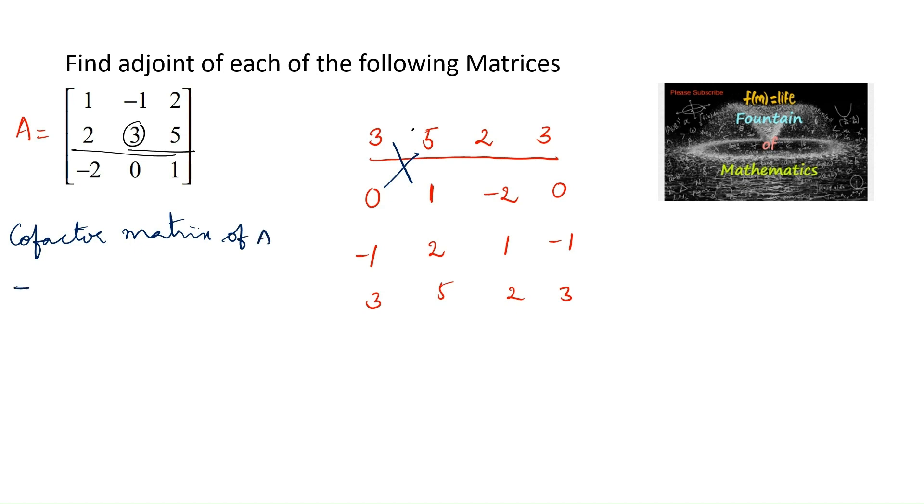The cofactor matrix of A: the first element is 3. Next, 5 times -2 is -10, -10 minus 2 is -12. And 2 times 0 is 0 minus -6, that is +6. Next, 0 times 2 is 0 minus -1 is +1. And 1 minus -4 is +4, 1 plus 4 is 5. And -2 times -1 is 2, 2 minus 0 is 2.